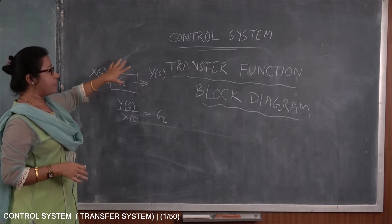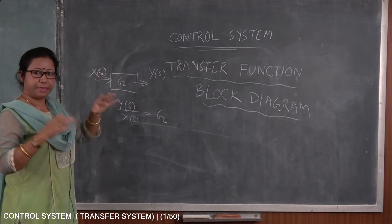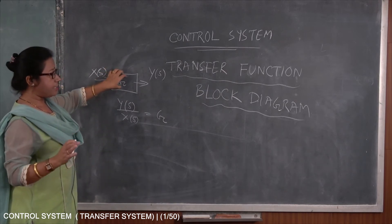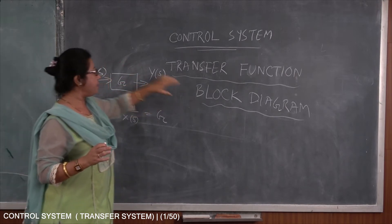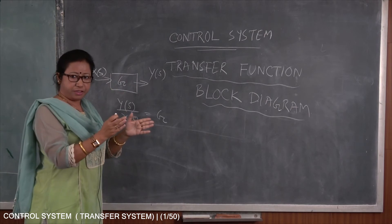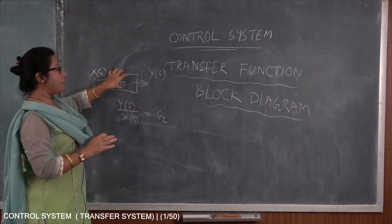A system means it may be mechanical system, may be electrical, may be non-electrical system. So a block in the block diagram method will consider only a block, will not think about the circuitry between them. So only the block.